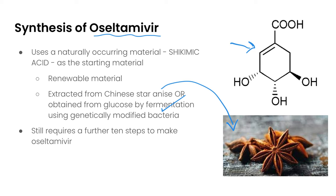The genetically modified bacteria route is actually even better than the star anise route, because yields from star anise can be low and dependent on its availability. So the GM bacteria approach is a little bit greener. Even so, it still requires a further 10 steps to make this medication, so it is still quite a process even when starting from a more natural material.